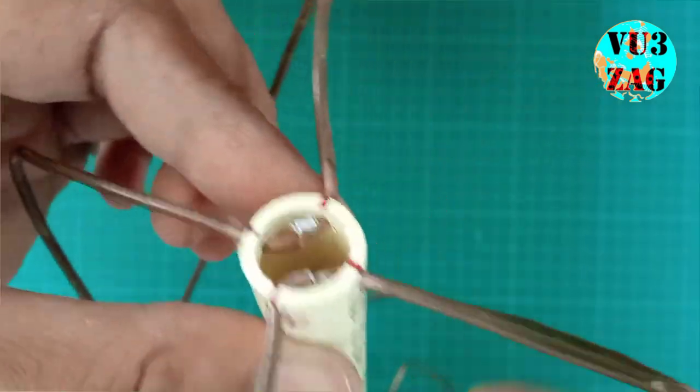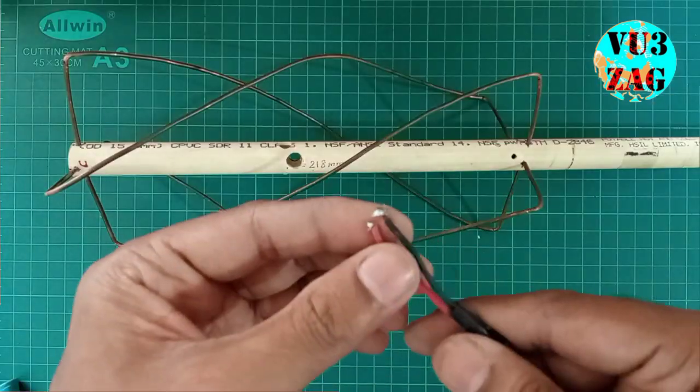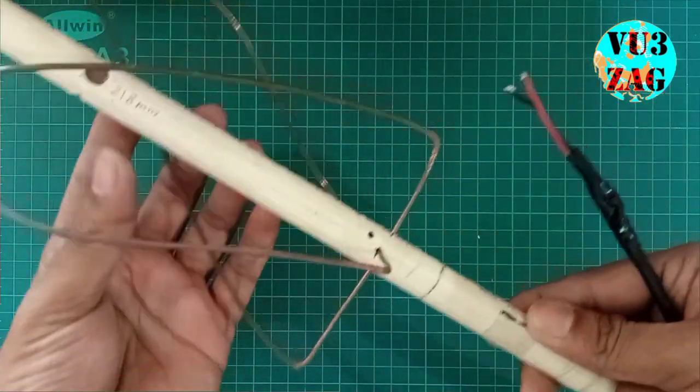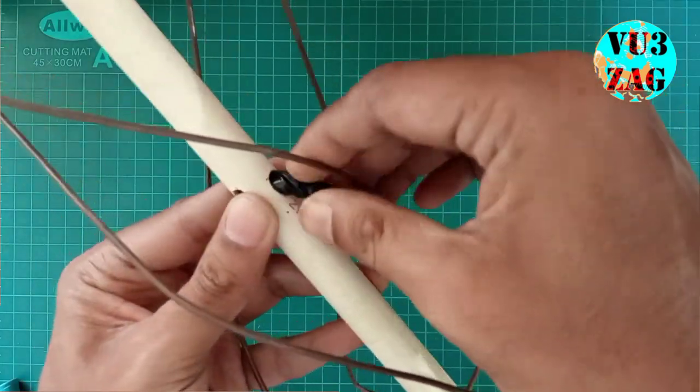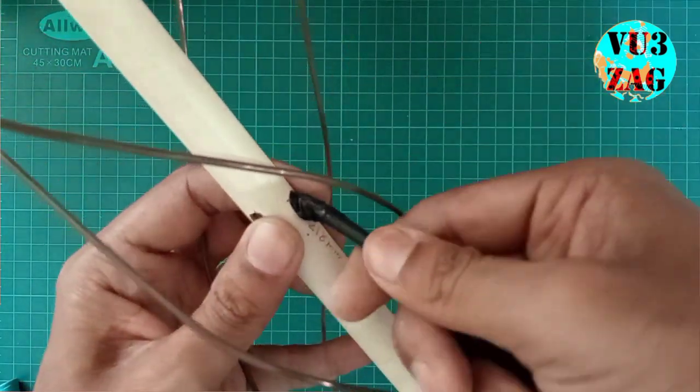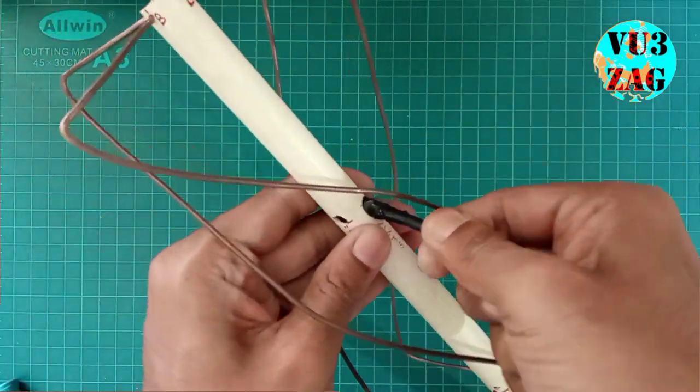Now let's insert the coaxial cable through the antenna pipe hole and solder it. To make it easy, I have connected small pieces of wire on the coaxial cable center conductor and shield wire.